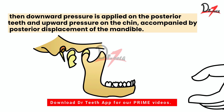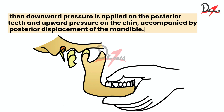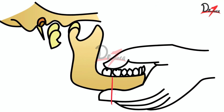In this animation we are viewing the patient's face from the lateral side and only one hand is visible. Downward pressure is applied on the posterior teeth and upward pressure on the chin, accompanied by posterior displacement of the mandible, thus treating the acute dislocation.